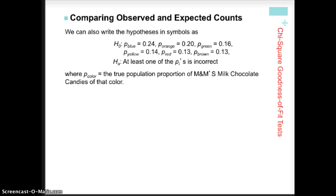And here we see it phrased in symbols. So you can see H-naught, or the null hypothesis, gives the proportion of blues is 0.24, the proportion of oranges is 0.20, etc. And then the alternative hypothesis says at least one of the proportions is incorrect. We always have to say what the P stands for. So where P with the subscript of color is the true or actual population proportion of M&Ms in that color.